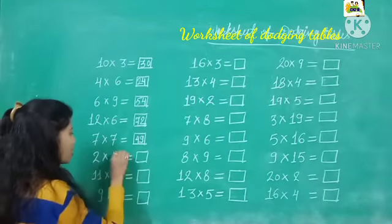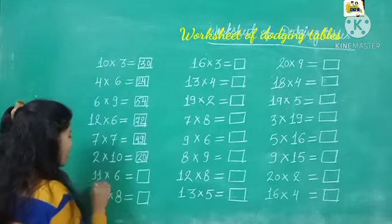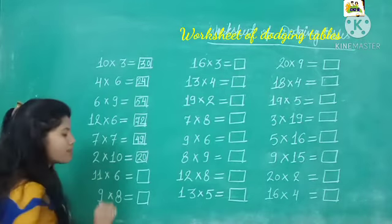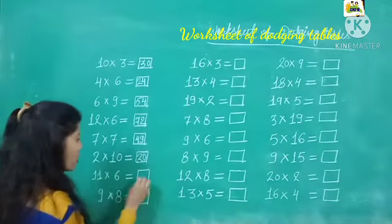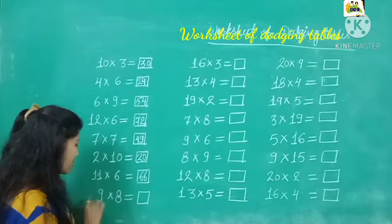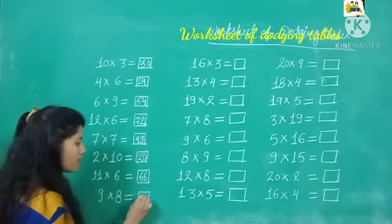2 tens are. Kya likha hai hai 2 tens are? 20. 11 sixes are. 11 ko 6 se multiply karenge to kya hoga? 66. Kya likha hai? 66. 9 eights are. 72.